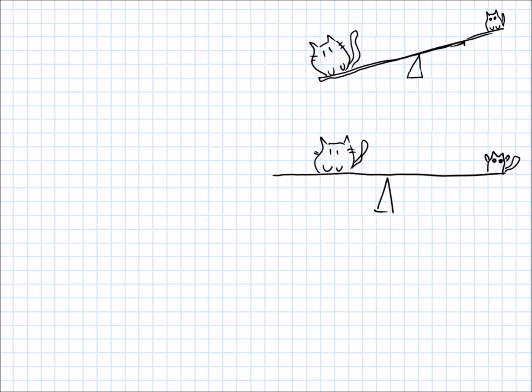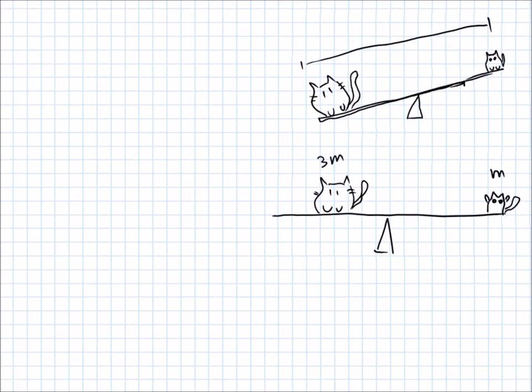We'll say that this one is mass m and this guy is mass 3m, something like that. And we'll say that the whole teeter-totter is length L. Our goal is to find how far in this guy has to go from the edge—I'll call this x—in order for them to balance each other out.